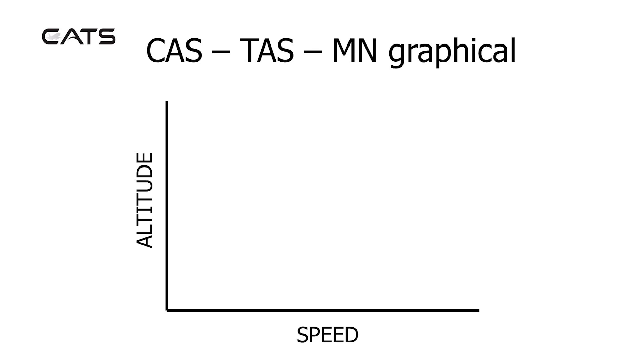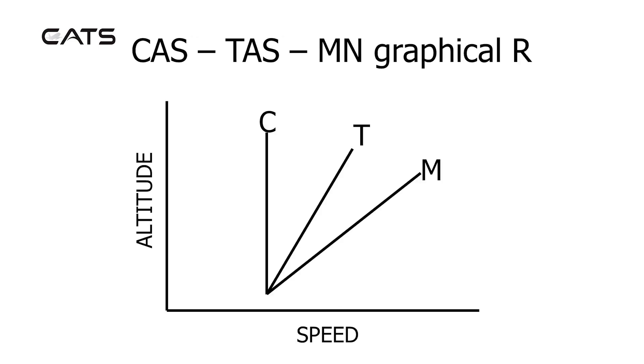There's a relationship between calibrated airspeed, true airspeed, and Mach number with altitude. And there's a graphical method for determining how they change with each other. So if you were to climb at a constant calibrated airspeed, fixed value, true airspeed will increase and Mach number will increase at a greater rate.